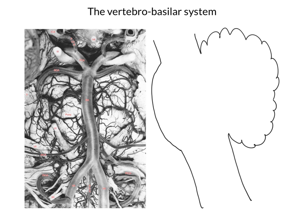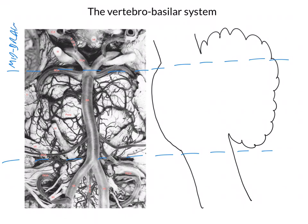The first thing we're going to do is define the levels that we're dealing with. We're going to draw some dotted lines, and these dotted lines apply to both images. These dotted lines are demarcating the three different parts of the brainstem: here we've got the midbrain, here we've got the pons, and here we've got the medulla.